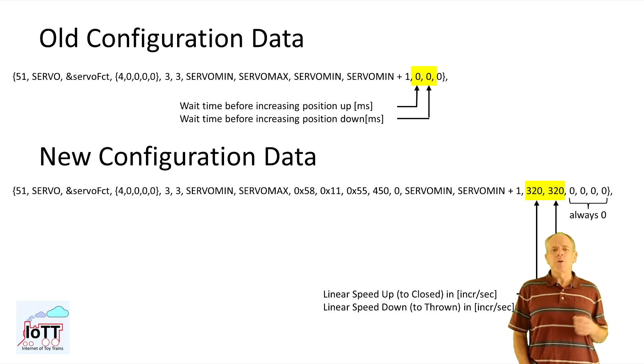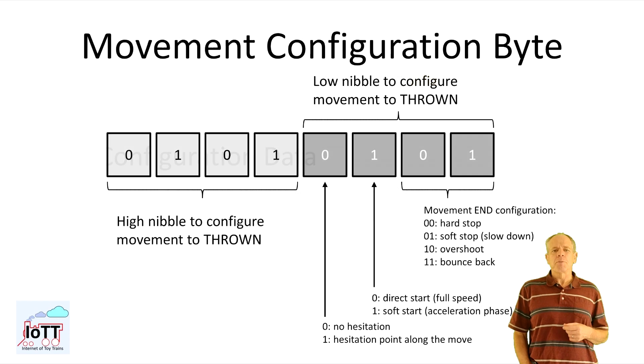Then I added five more variables to configure how the servo moves. The first one is the actual configuration byte. The lower nibble is when the servo goes to higher increments or to the closed position. The higher nibble is for the other direction. In each nibble the first two bits define how the movement stops. The third bit defines the start mode and bit number four indicates the presence of a hesitation on the way to the target position.